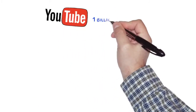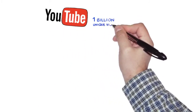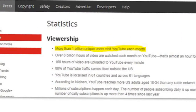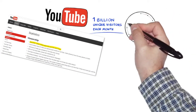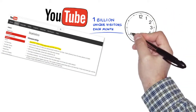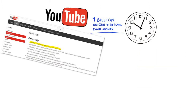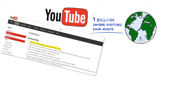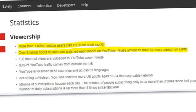Did you know that YouTube gets over 1 billion unique visitors each month to its website? Now you do. And did you know that over 6 billion hours of videos are being watched each month on YouTube? That's almost one hour for every person on Earth. Now you do.